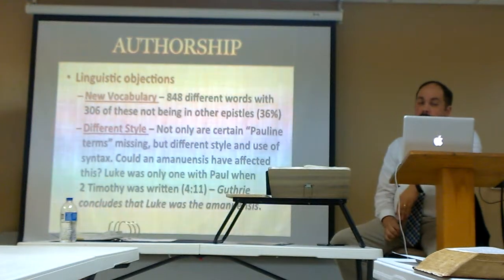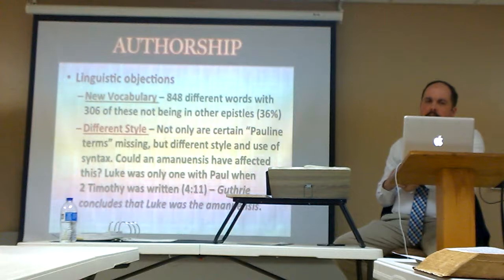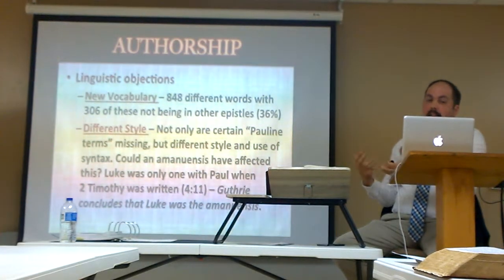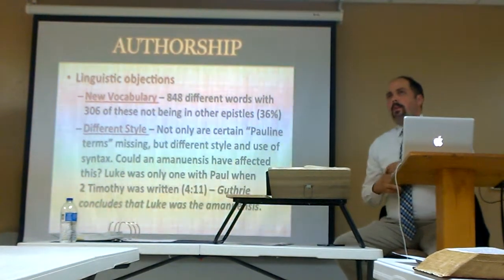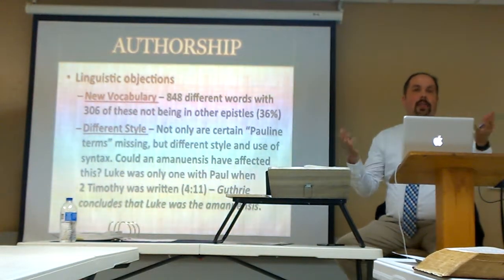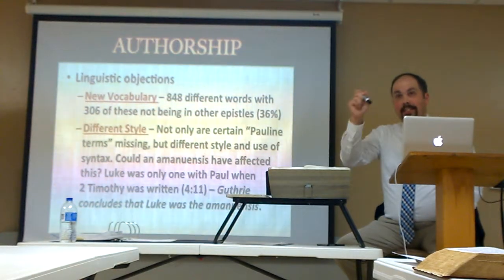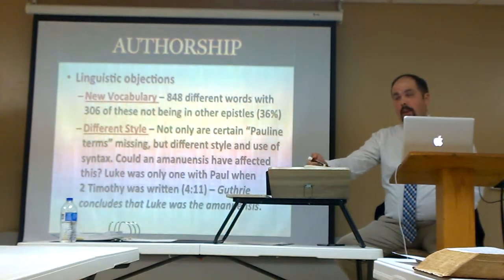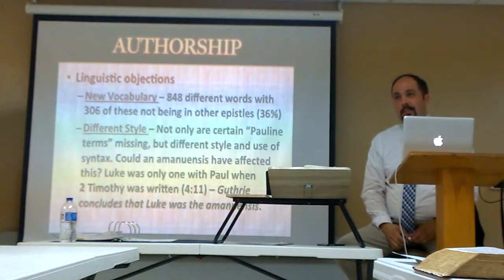An amanuensis is basically a secretary. Paul writes the letter, but for example, we know that Paul didn't take a stylus and actually write Romans down — although he's the author — because his amanuensis, Tertius, is named in Romans 16:22. The way you would write a letter in the first century world might not be sitting down at a computer and hammering it out in a couple of hours. It would take time, money, and materials.